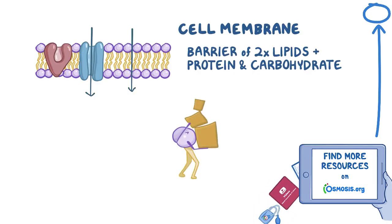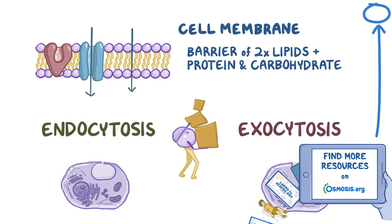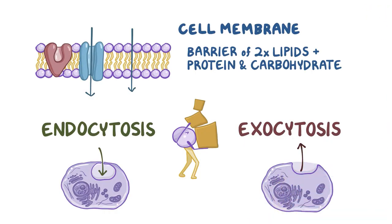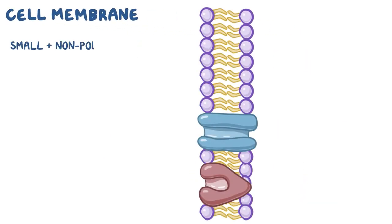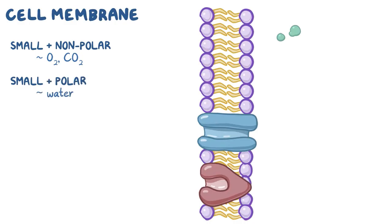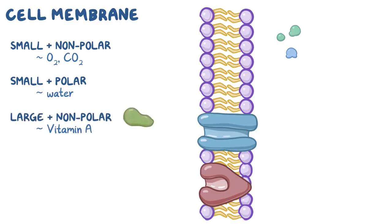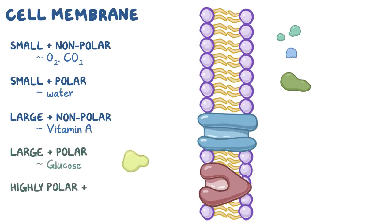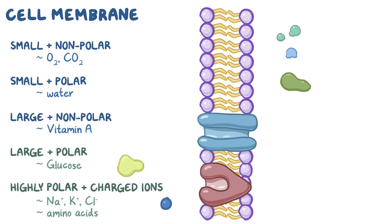For transport of larger cargo, however, cells use endocytosis and exocytosis to transport material in and out of the cell, respectively. There are roughly five categories of molecule that try to get across the cell membrane. Small nonpolar molecules like oxygen or carbon dioxide are able to diffuse rapidly through the cell membrane. Small polar molecules like water can cross as well, but do so very slowly. Large nonpolar molecules like vitamin A are also very slow to cross the cell membrane. And large polar molecules like glucose and highly polar charged ions like sodium, potassium, and chloride, as well as molecules that possess a charge like amino acids, are all highly unlikely to get across a cell membrane on their own.